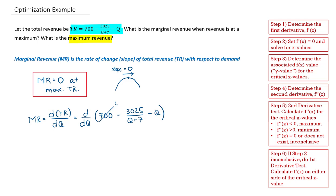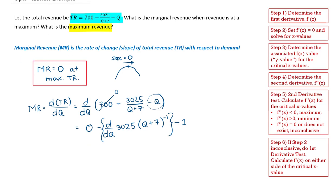The derivative of 700 is going to be 0. Then I have the derivative of 3025 times Q plus 7 to the power of negative 1, employing the chain rule — alternatively I could use the quotient rule — minus the derivative of Q, which is going to be equal to 1. I'm going to use the chain rule here, where U is equal to Q plus 7, and the function F of U is equal to U to the power of negative 1.